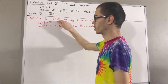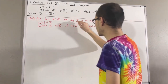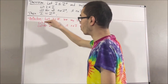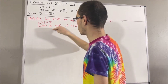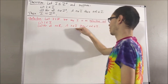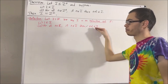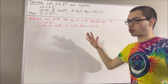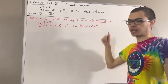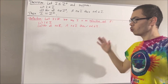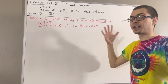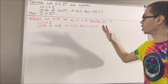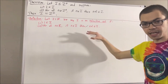Let i be a subset of the real numbers. We say i is an inductive set if 1 is an element of i, and for all real numbers n, if n is an element of i, then n plus 1 is an element of i. For example, the set of real numbers itself is an inductive set. And so, we defined the positive integers as the set of real numbers which belong to every inductive set.